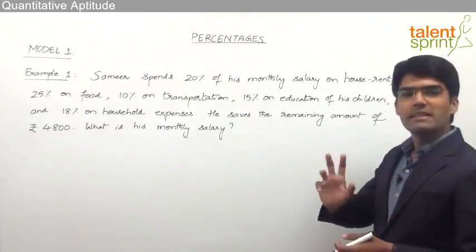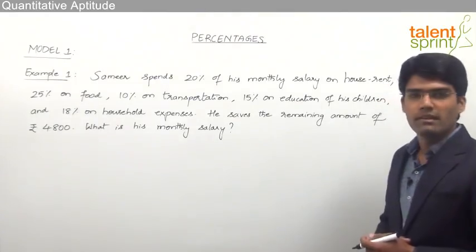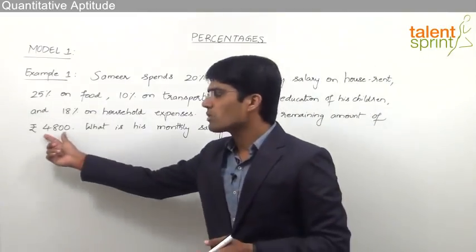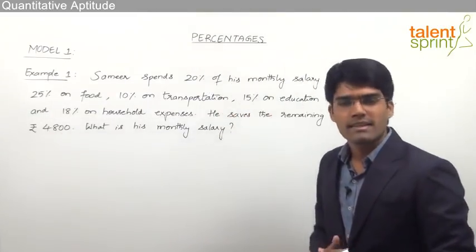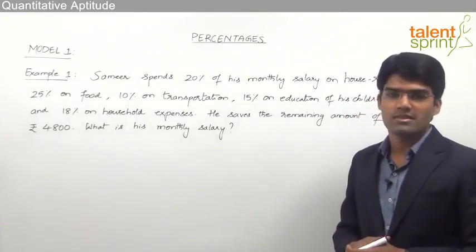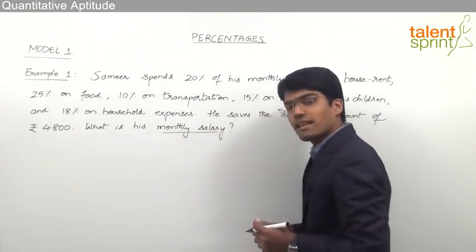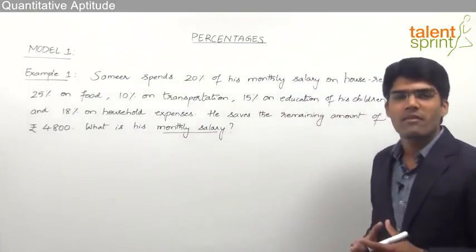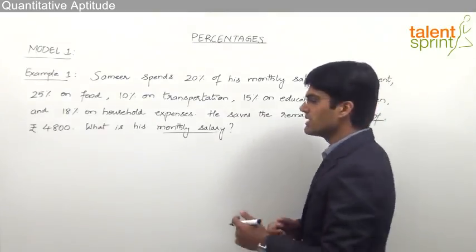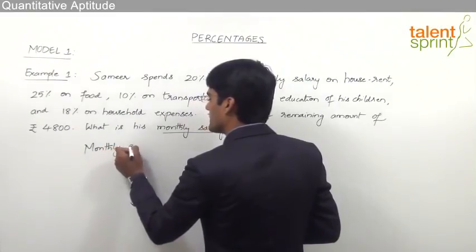As you can see here, the monthly budget distribution of Samir has been given, and it says that he can save an amount of Rs. 4,800 every month. From this, we are supposed to find out what is his total salary. Now as discussed earlier, the monthly salary, which is the maximum value or the total value, can be taken as 100%. So let us assume that his monthly salary is equal to 100%.